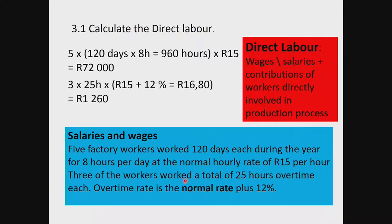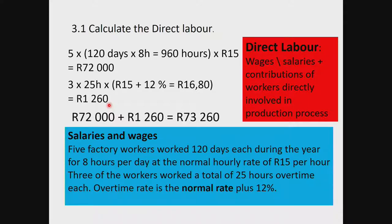In this example there is no contribution. So the total direct labor is normal time of R72,000 plus overtime of R1,260, which gives R73,260. Make a note of that amount because we will be coming back to it. That R73,260 is the direct labor - the salaries and wages of the workers directly involved in the production process.